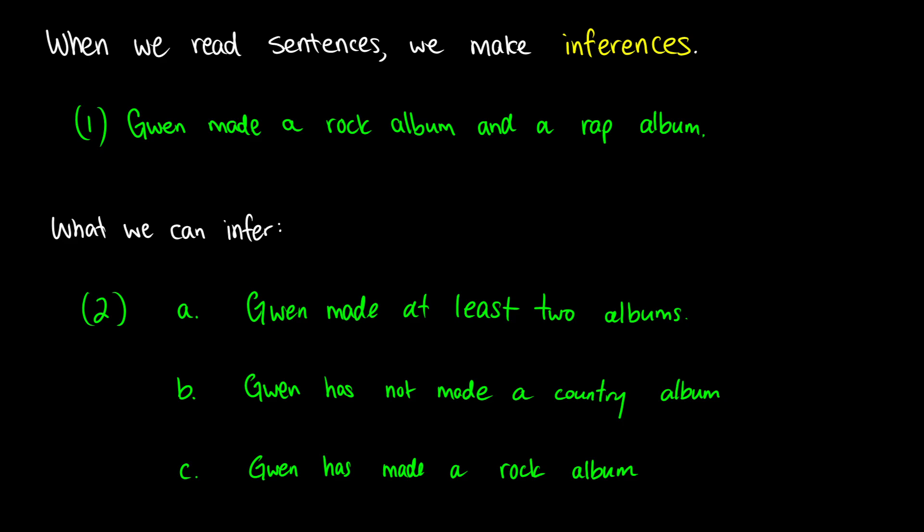We can think about inferences as things that we infer or understand what someone means when they say something. So let's say we have a sentence like, 'Gwen made a rock album and a rap album.' There are a few facts we can take from this, and some things we can infer. A fact we know: if Gwen made a rock album and a rap album, we know that Gwen made at least two albums. We can also infer that Gwen has not made a country album — this is not necessarily a fact, because it could be that there's information being left out.